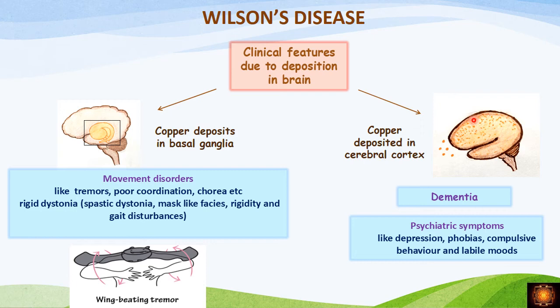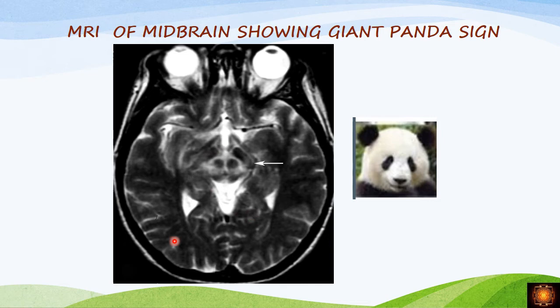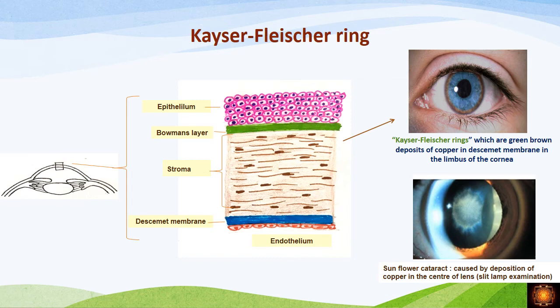When copper continues to be deposited in the cerebral cortex, the patient develops dementia, followed by other psychiatric symptoms like depression, phobias, compulsive behavior, and labile moods. On MRI of the midbrain, in the center you can see an image resembling the face of a panda — this is called the giant panda sign, which is specific for Wilson's disease.